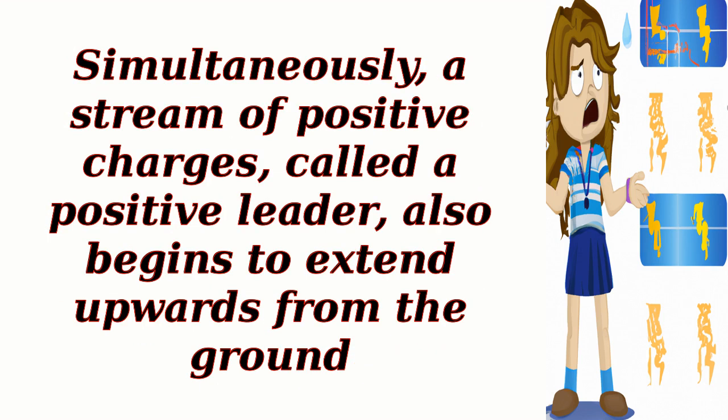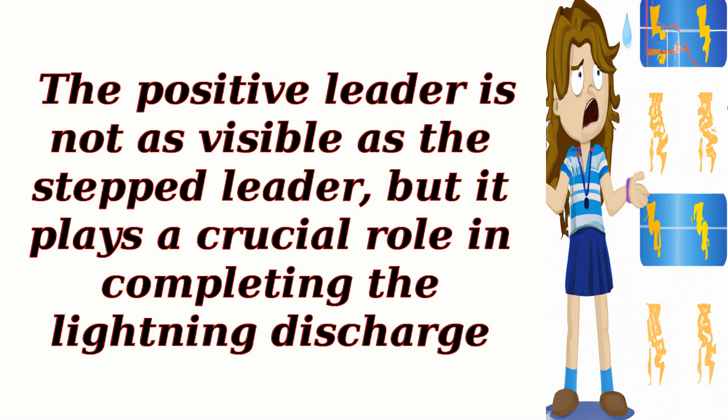Simultaneously, a stream of positive charges, called a positive leader, also begins to extend upwards from the ground. The positive leader is not as visible as the stepped leader, but it plays a crucial role in completing the lightning discharge.